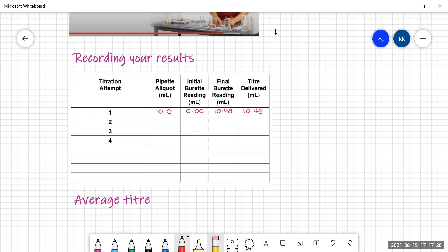Now I'm going to repeat this process until I get to concordance. So I want three concordant titers. That means I want three titers for which the biggest minus the smallest is less than 0.1 of a mil. It seems unachievable, but with plenty of practice, you'll actually be able to get this very easily.